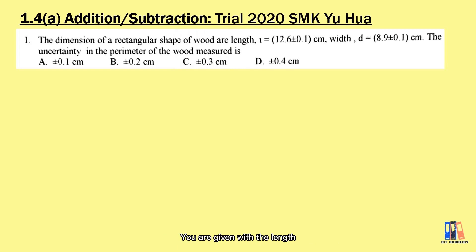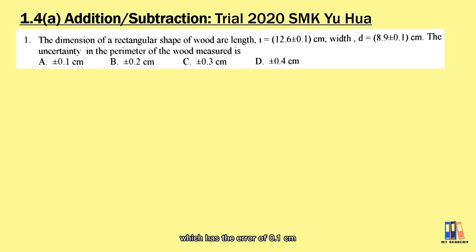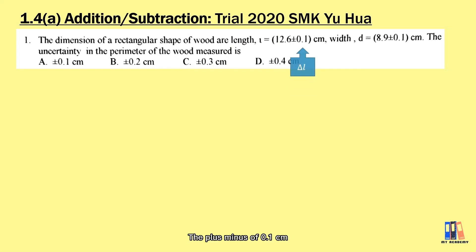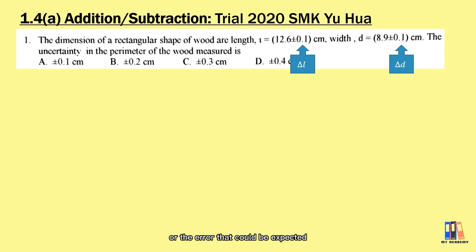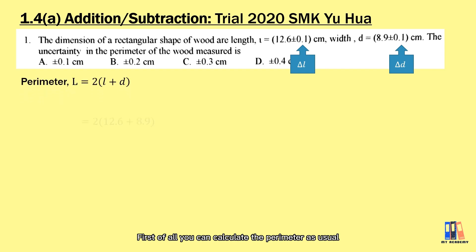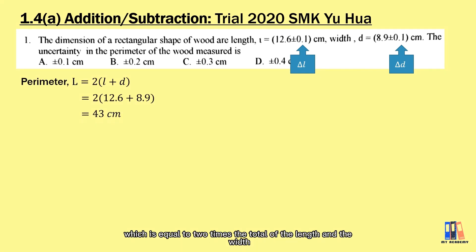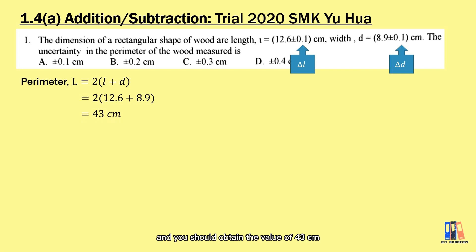We are given the length and the width of a rectangular shape of wood, which has the error of 0.1 cm for each of the length and the width. So the ±0.1 cm is the uncertainty or the error expected from the measurement. You can calculate the perimeter as usual, which is equal to two times the total of the length and the width, and you should obtain the value of 43 cm.